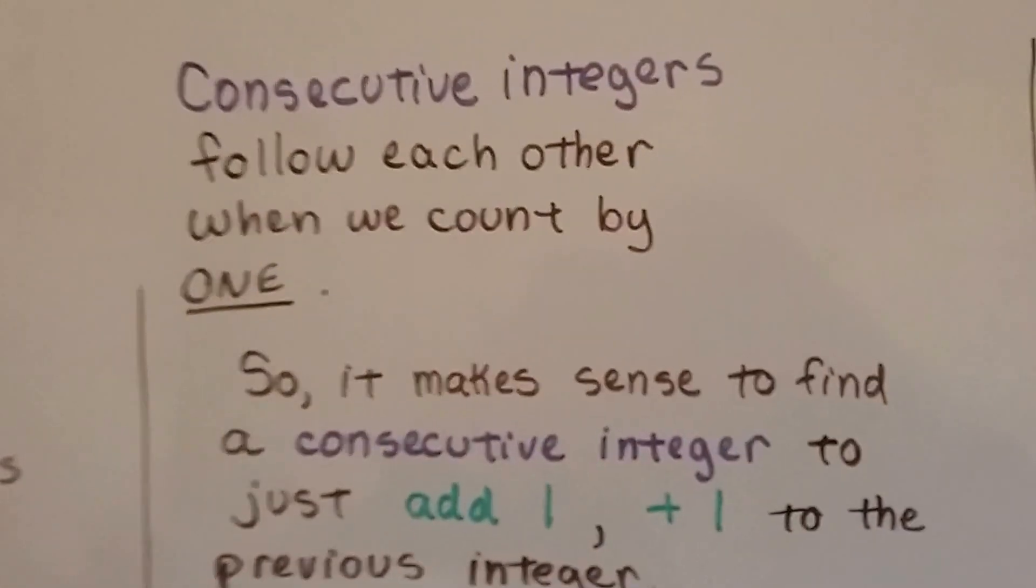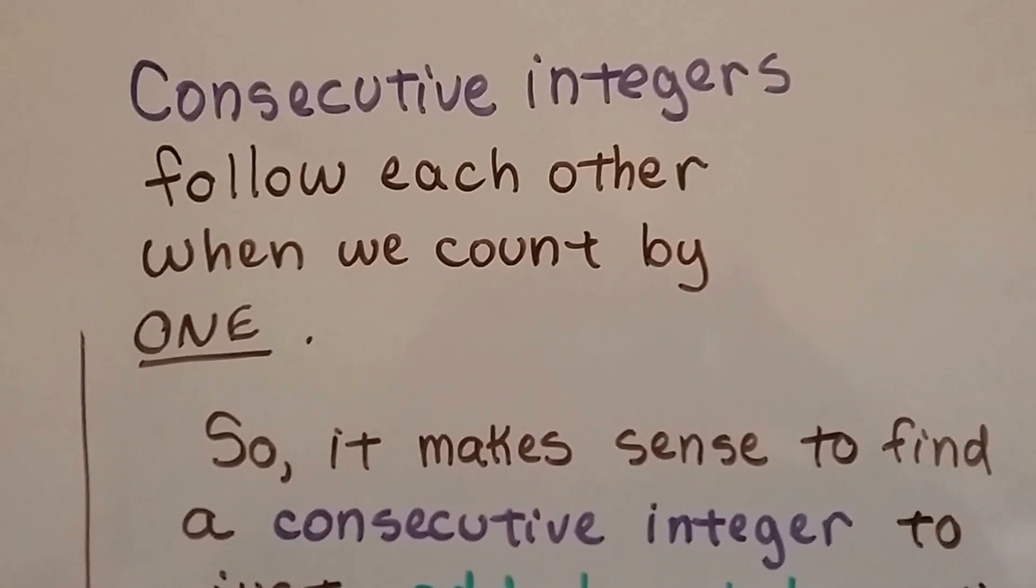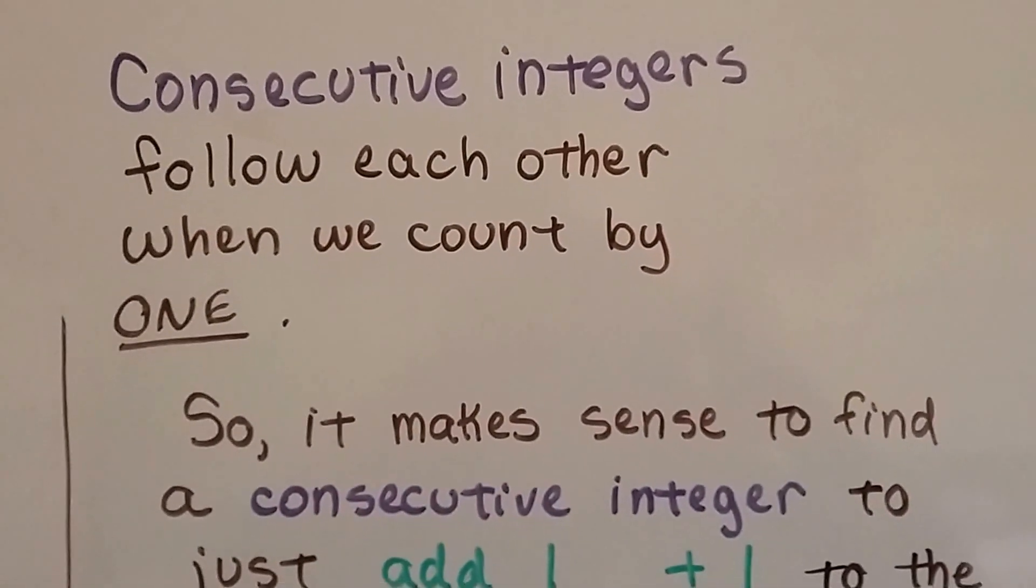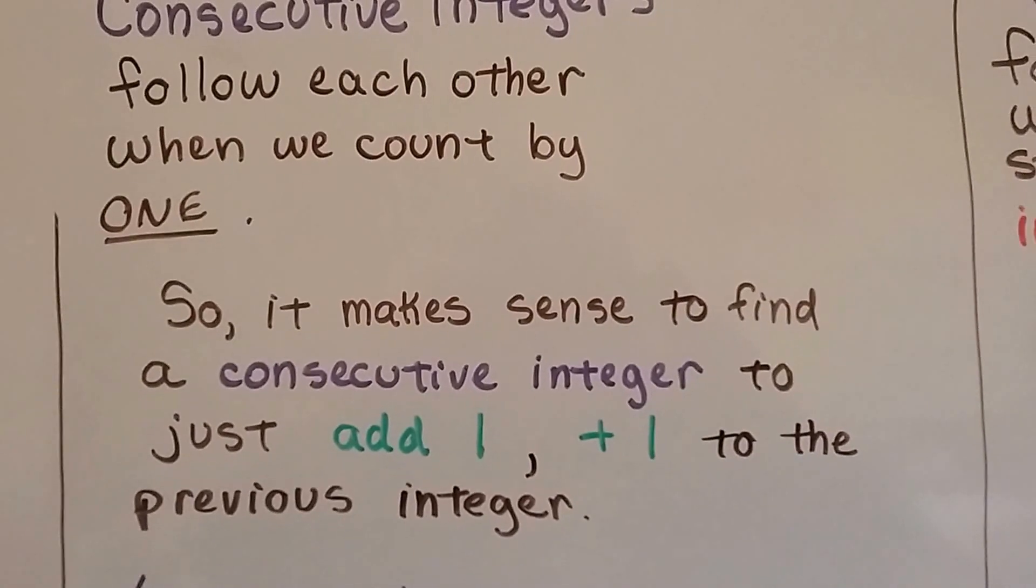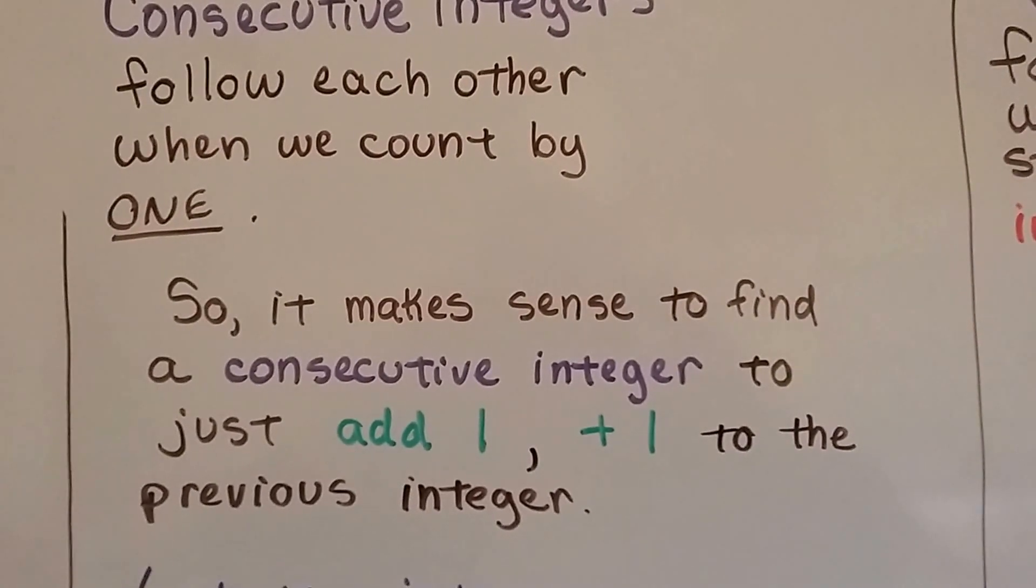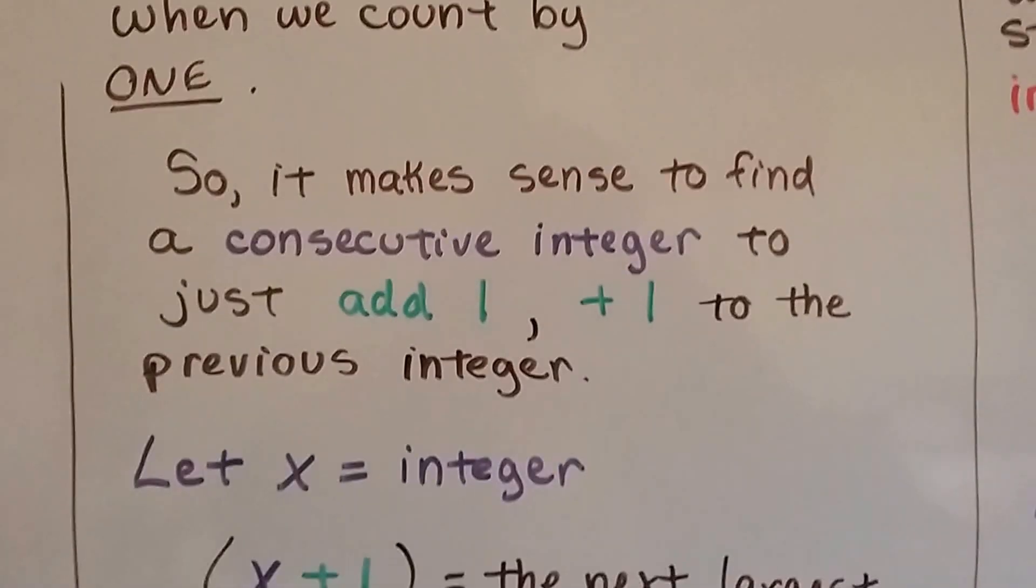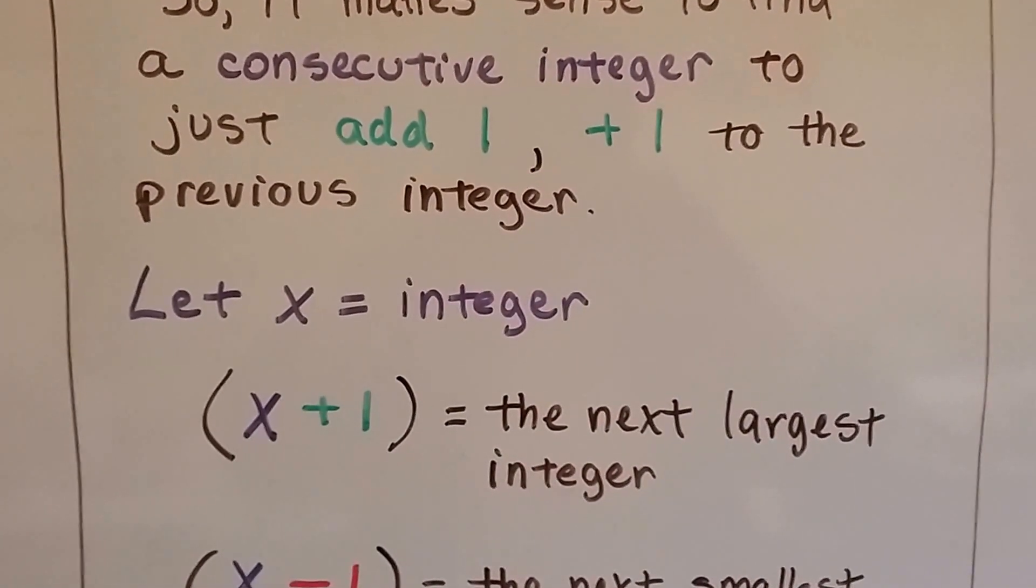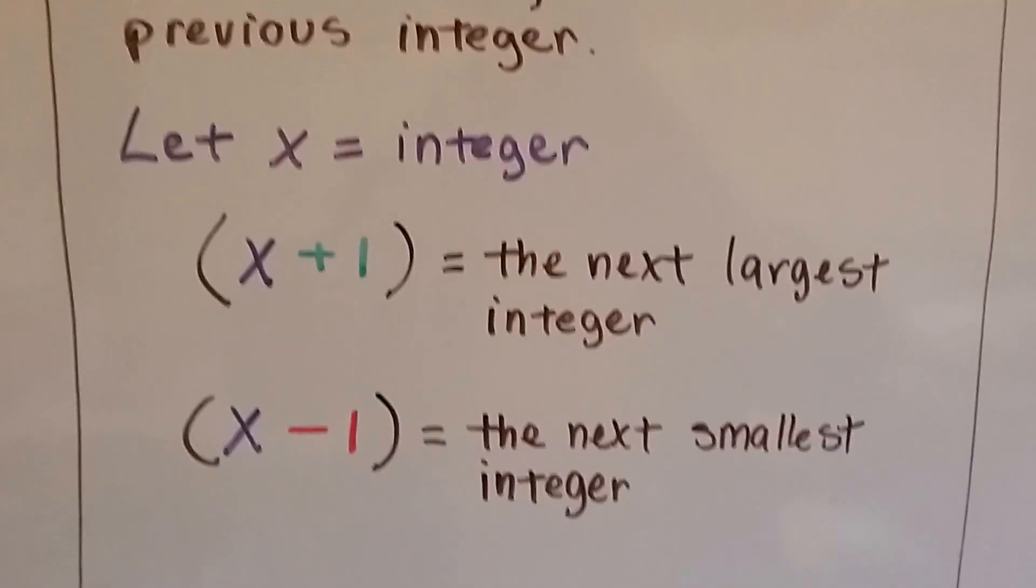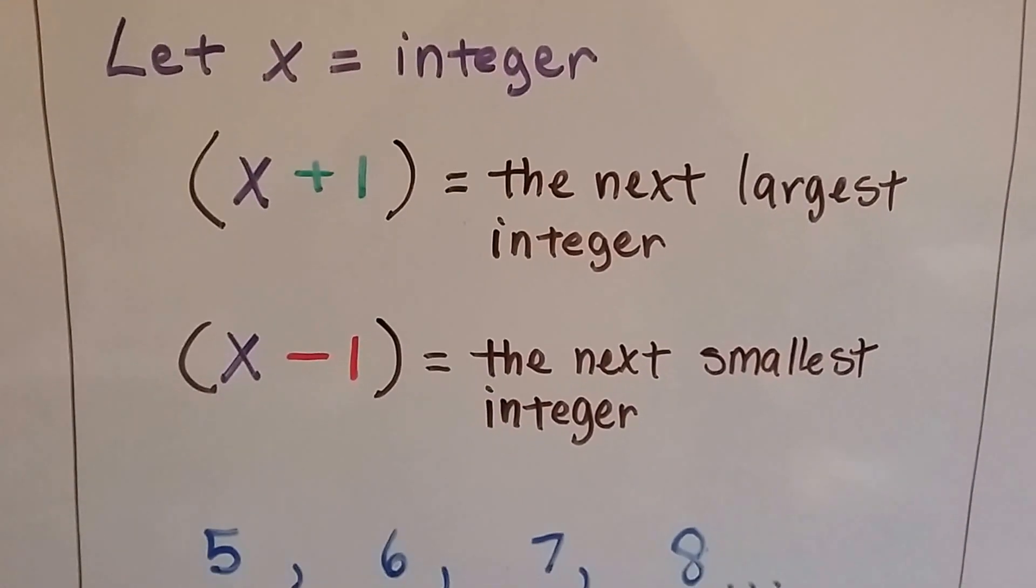So consecutive integers follow each other when we count by 1 as regular consecutive integers. So it makes sense to find a consecutive integer to just add 1 to the previous integer. If x was an integer, we could do x plus 1, that's the next largest integer. And if we do x minus 1, that's the next smallest integer.